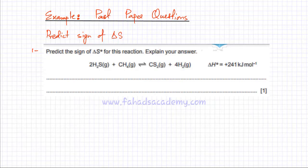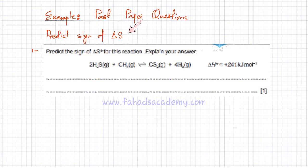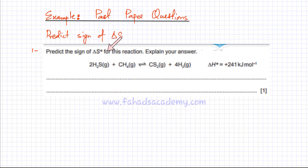We will now try and do a few past paper questions in which we're going to try and predict the delta S sign — whether delta S is positive, whether entropy is increasing, or whether delta S is negative and entropy is decreasing. In this first past paper question, you're asked to predict the sign of delta S and you have to explain your answer as well.